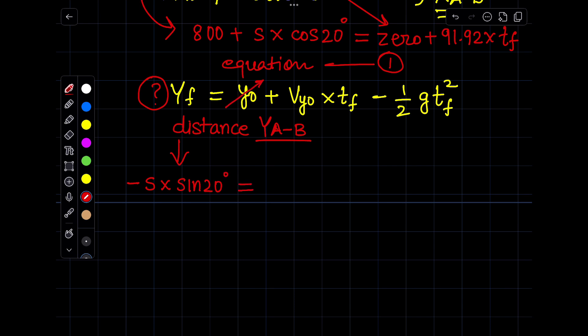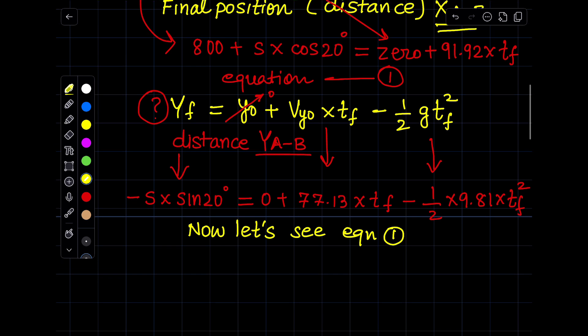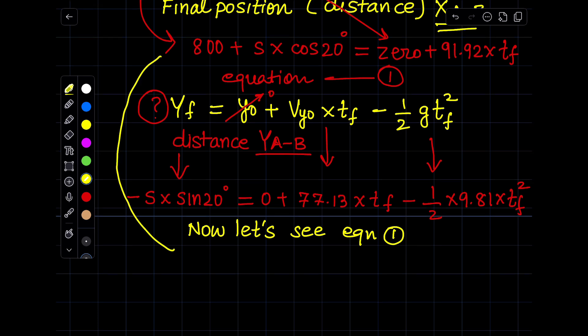This is equal to Y₀ will be 0 because our datum starts, or projectile motion starts from the origin, so the Y₀ will be 0. Now we will write the values for VY₀ multiplied by TF and minus half g×TF². This becomes our second equation. And how many unknowns are in this equation? If you look at both equation 1 and 2, there are two unknowns. The first unknown is TF and the second unknown is S, the distance. So we have two equations, two unknowns.